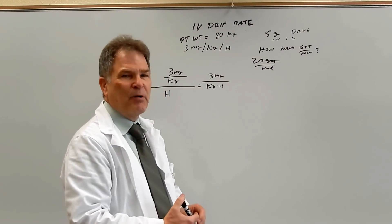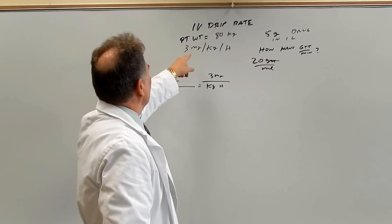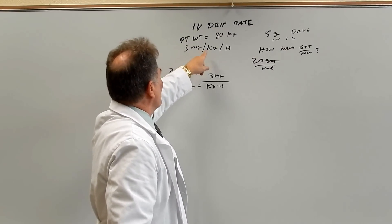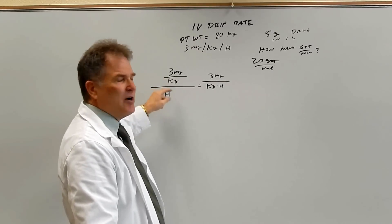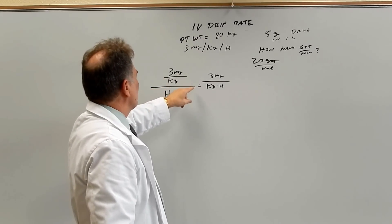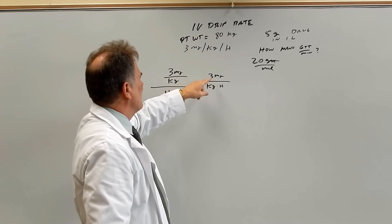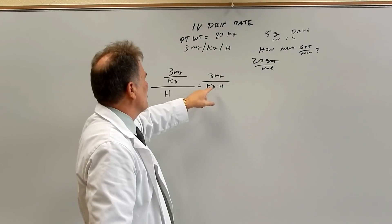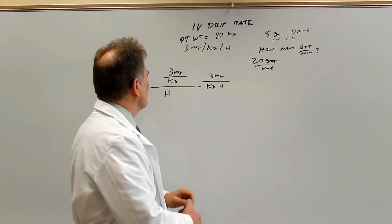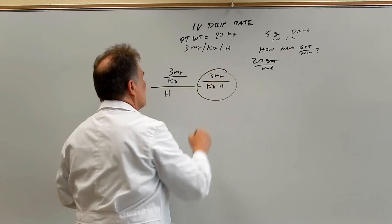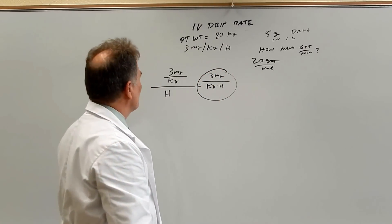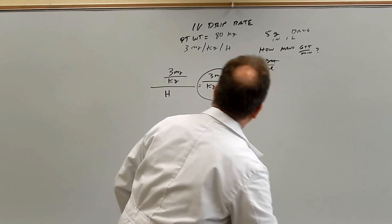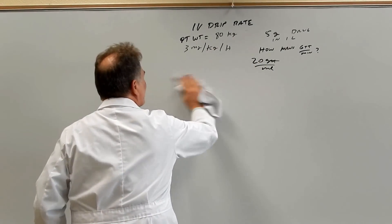Before I get to this setup, I want to explain one little thing here. It's three milligrams per kilogram per hour. It means three milligrams for each kilogram per hour. And that is the same mathematically as three milligrams per kilogram times hour. So we're just going to use this form right here in our equation.